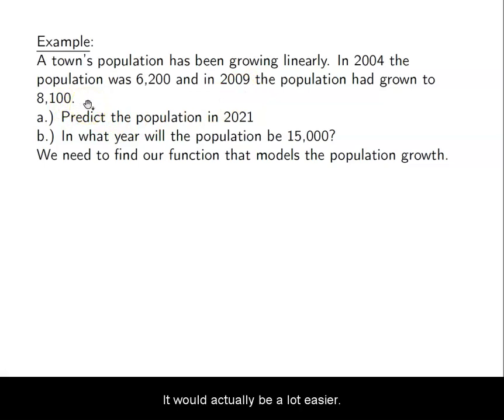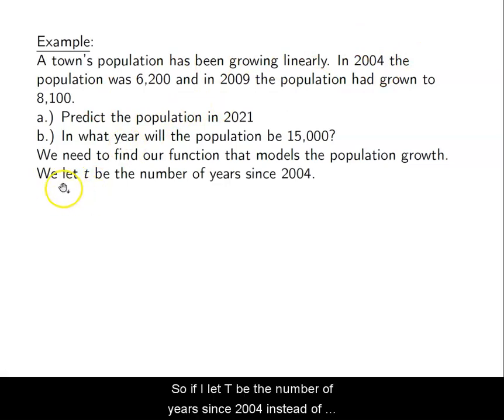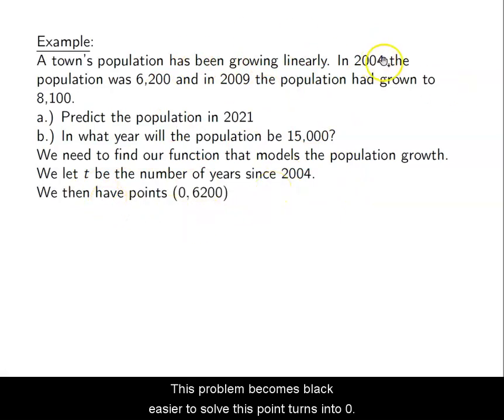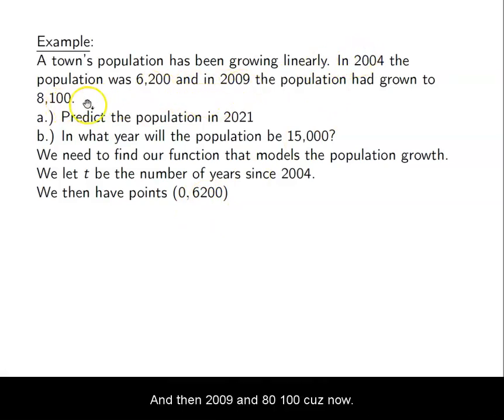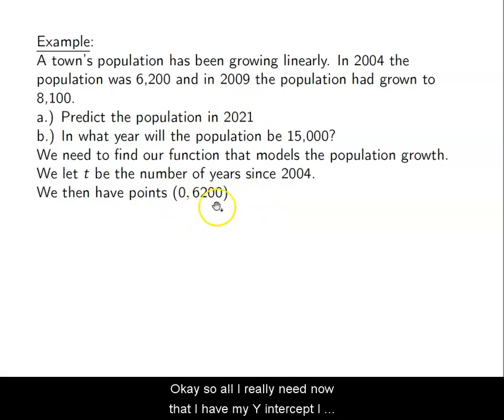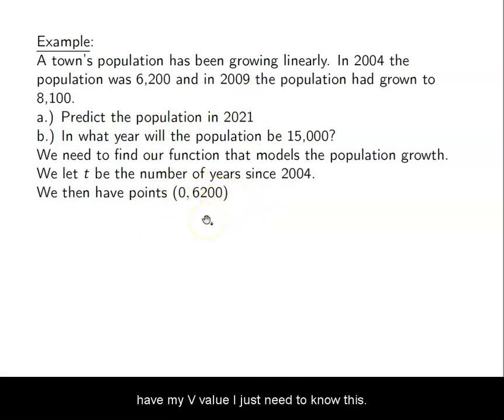Now, it would actually be a lot easier for me to think of time starting at 2004. So if I let t be the number of years since 2004 instead of the number of years since year zero, this problem becomes a lot easier to solve. This point turns into (0, 6200), which is way easier to work with than (2004, 6200), and then (2009, 8100) because now this is a y-intercept. So all I really need now that I have my y-intercept, I have my b value, I just need to know the slope.